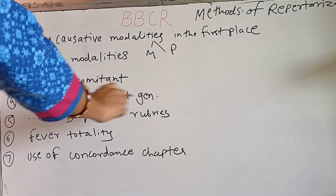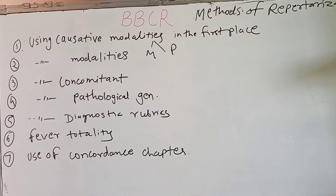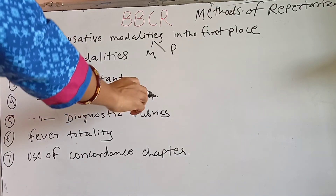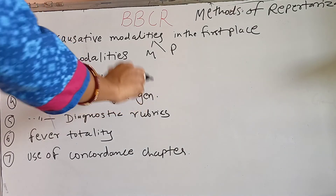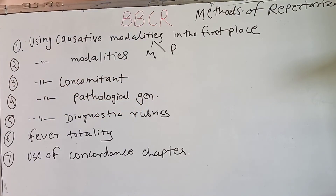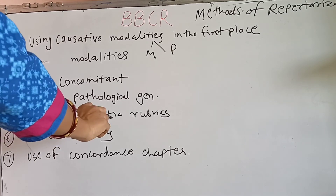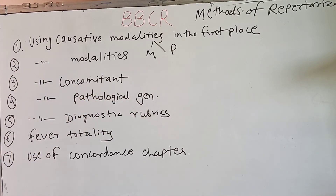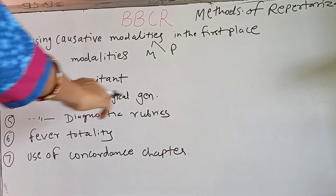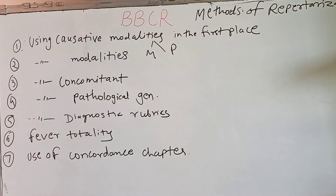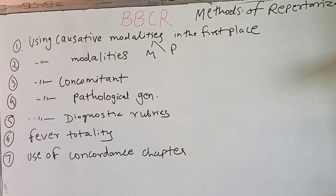The fourth method is using pathological general, which we have already discussed. We use pathological general when we find a similar pathology in two or more parts of the body. The fifth method is using diagnostic rubrics. This helps mainly in finding a palliative drug — a drug suitable for overcoming the present crisis — especially in cases where characteristic symptoms are not present and the picture is not clear.